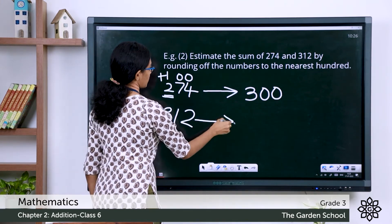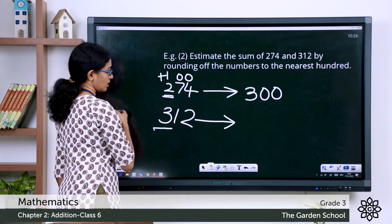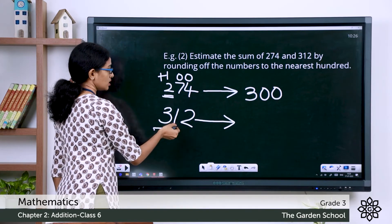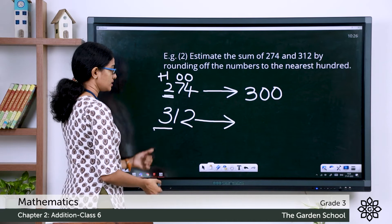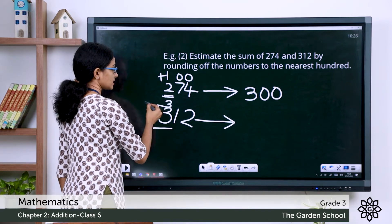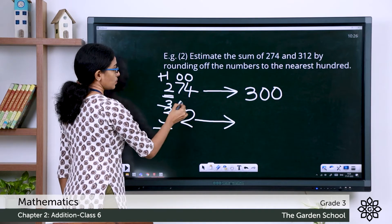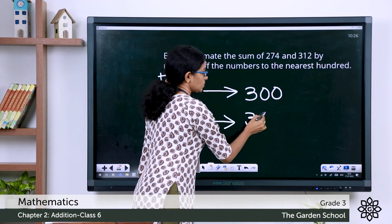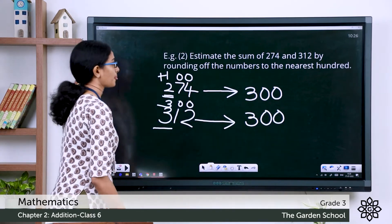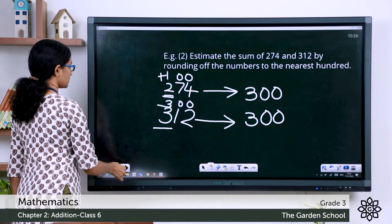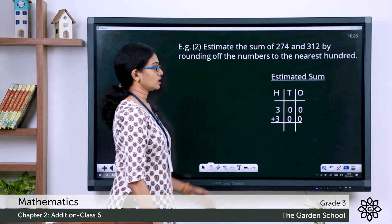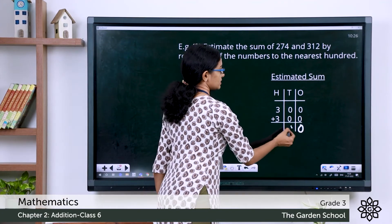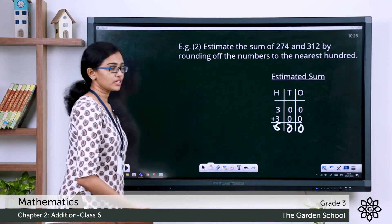312 rounded off to the nearest hundred — here 3 is the rounded digit, and the digit to the right of it is 1, so there is no change to the rounded digit. Let's keep it as it is and change the tens and ones to zeros. That gives you 300. Now the estimated sum is 300 plus 300, which is 600.